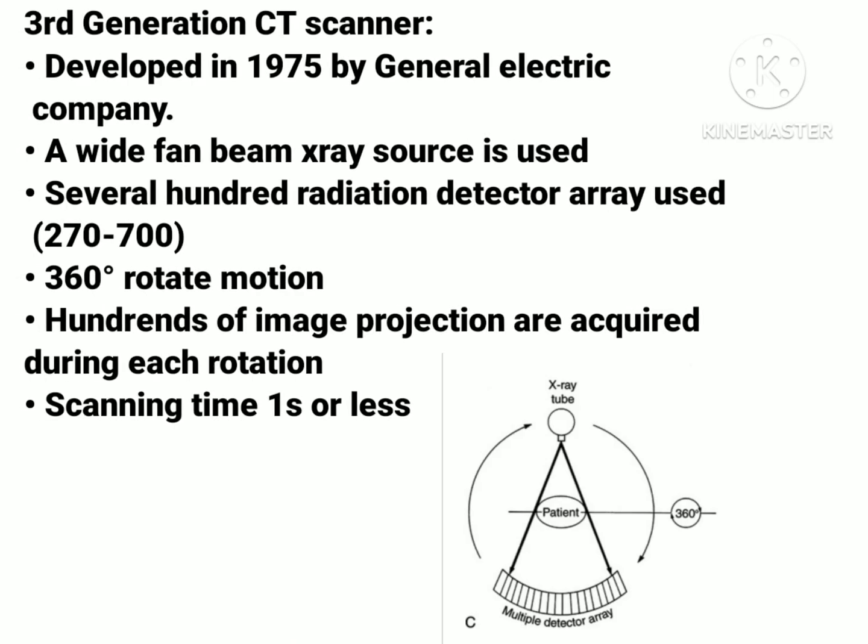The third generation CT scanner was developed in 1975 by the General Electric Company. In this generation, scanners needed to be faster and required elimination of translation motion, so that smoother and simpler pure rotational motion could be used. For that, a widened X-ray beam — a wide fan beam — was used as the source. The detector array is rigidly linked with the X-ray tube, so both the X-ray tube and detectors rotate around the patient. This motion is referred to as rotate-rotate.